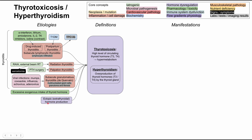There's also ectopic production of thyroid hormones — when it comes from outside the thyroid. One possibility is struma ovarii, a female tumor that produces ectopic thyroid tissue. Another is when thyroid cancer has metastasized away from the thyroid, such as in metastatic follicular thyroid carcinoma.